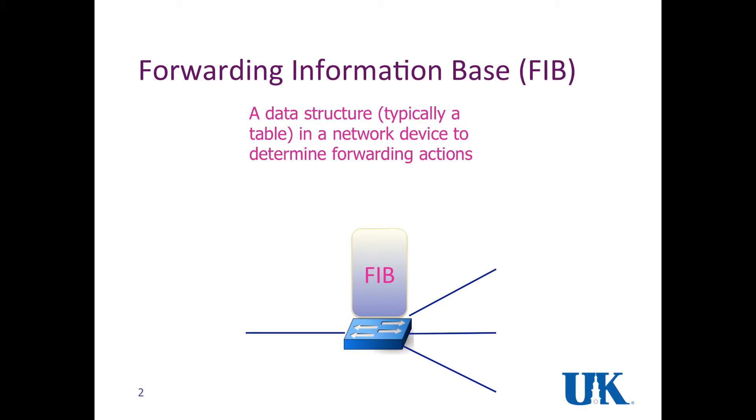So I'm a networking guy, and Jamal and Chen are theoreticians. This work represents a concise forwarding information base for scalable and fast name switching. So what is forwarding information base? A FIB is actually a data structure, typically a table, in a network device like a switch and router to determine the forwarding actions for a particular packet. The input of a FIB is a destination or the packet header. The output of the FIB is a forwarding action, for example, forwarding the packet to a certain port or just drop the packet.